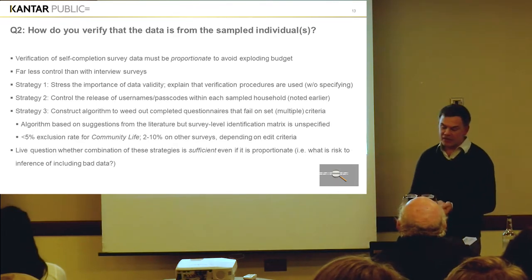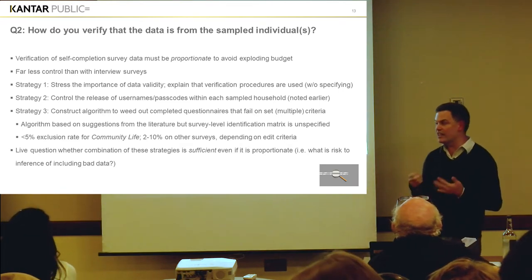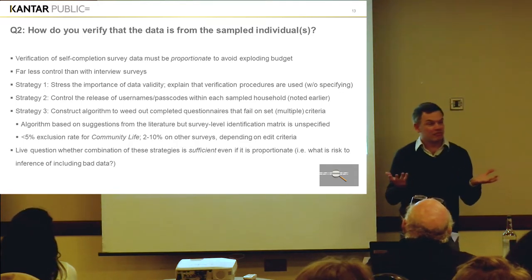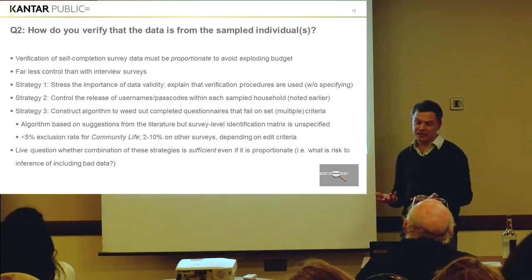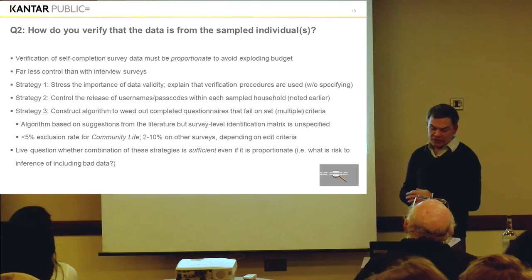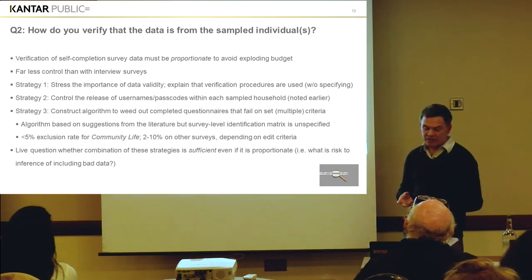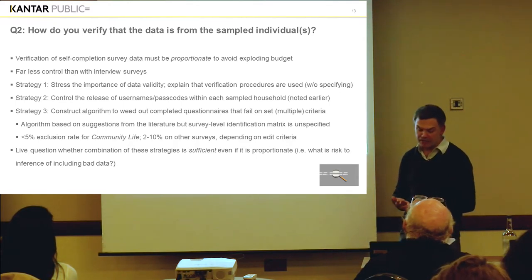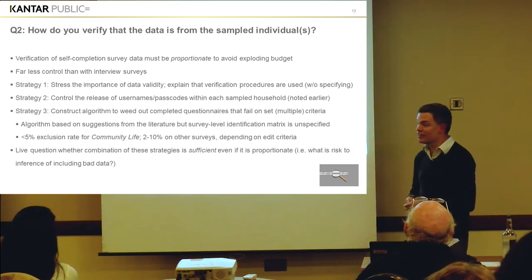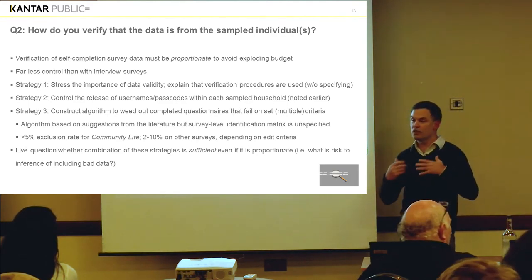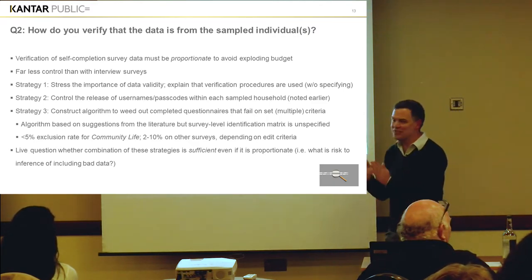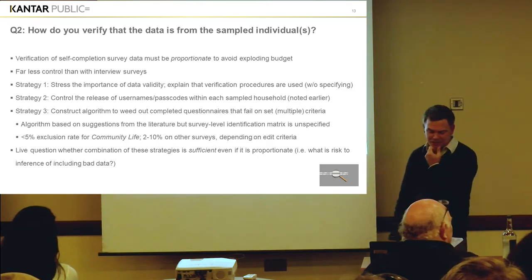Question two: how do you verify that data is from the sampled individuals? Well, any verification of self-completion survey data has to be proportionate. If you are spending masses of money verifying this data, then one of the reasons for collecting data in that way in the first place is lost. But you do have far less control than with interview surveys. So we use a mixture of three strategies. The first is actually just stressing as part of the questionnaire the importance of data validity, explaining that you as an agency will be using verification processes — even if you don't describe exactly what those processes are — to make an open request for honesty, but also say we do some checking.